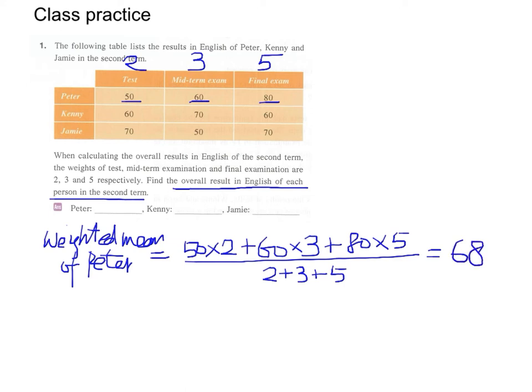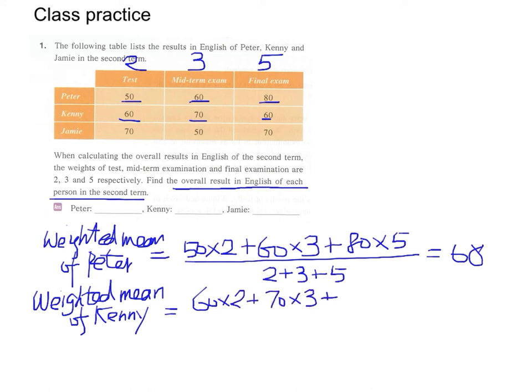And similarly, the weighted mean of Candy will be 60 times 2 plus 70 times 3 plus 60 times 5. Again, divided by 10. We have 63.